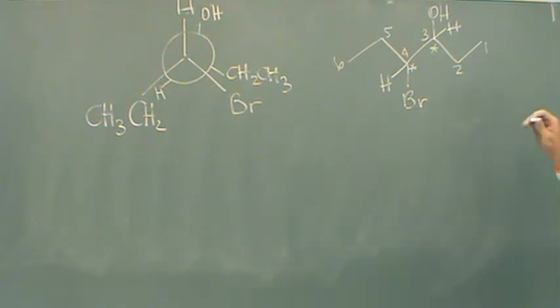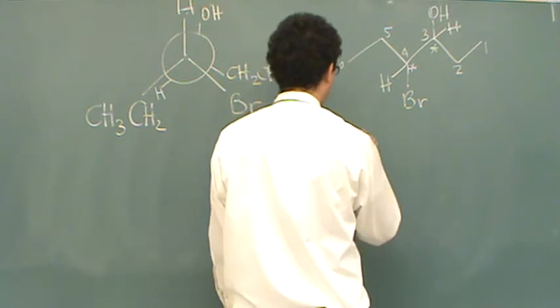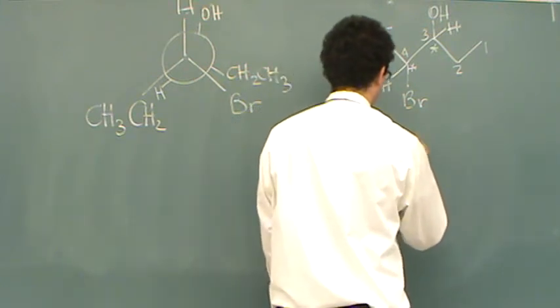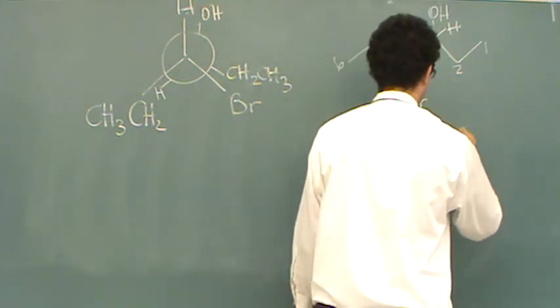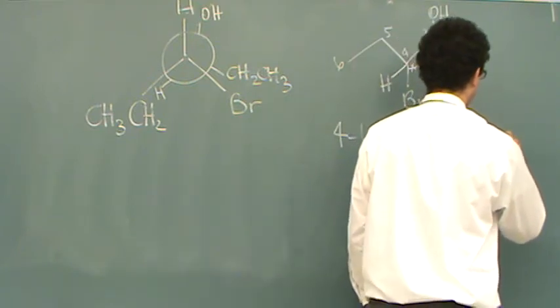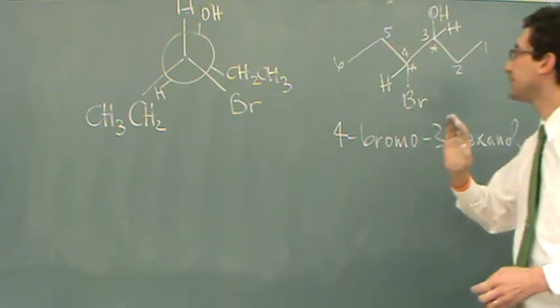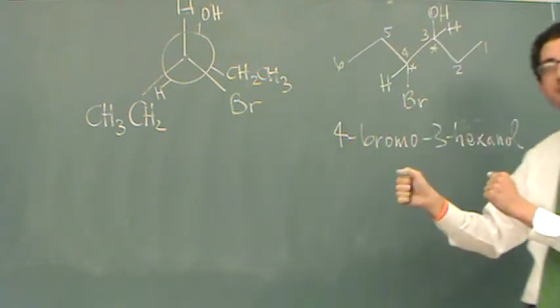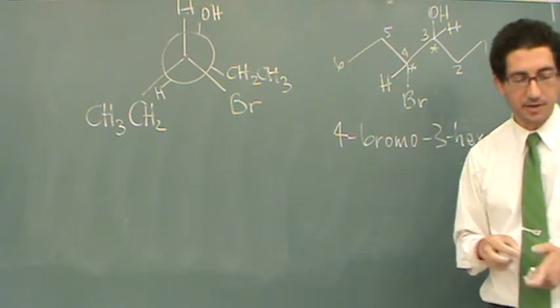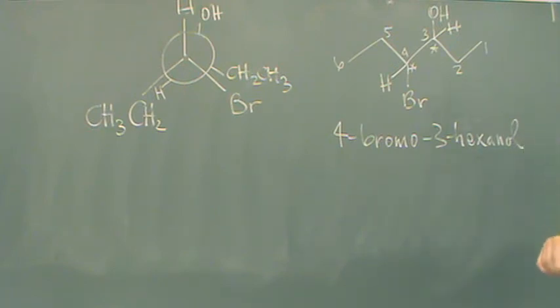So this is going to be a hexanol, a 4-bromo-3-hexanol. And you can also do hexan-3-ol if you prefer that kind of name. Now we need to name the R and S stuff, or the stereocenters. So in that case, probably pick your favorite way of naming R and S. You can look at some of my other videos if you don't know how to do that.